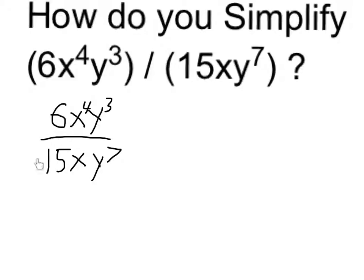If I first look at the numerical part, I can do that just like I would simplify a fraction. I notice that between the 6 and 15, they are both divisible by 3, so this can be reduced to 2 over 5. 2 times 3 is 6, and 5 times 3 is equal to 15. So I've reduced the numerical part to 2 over 5.